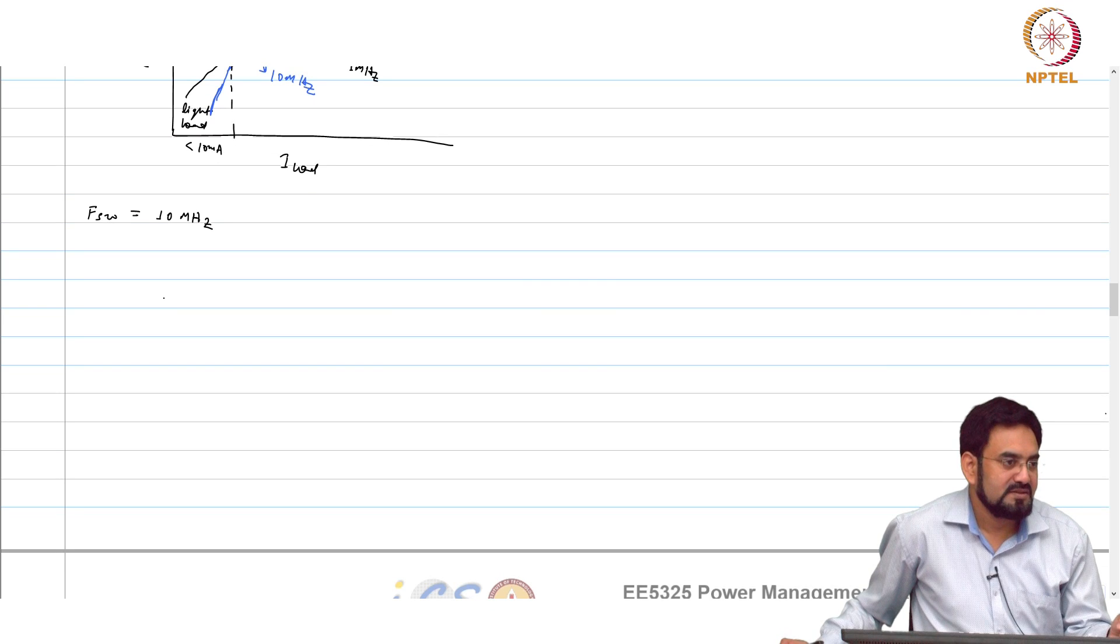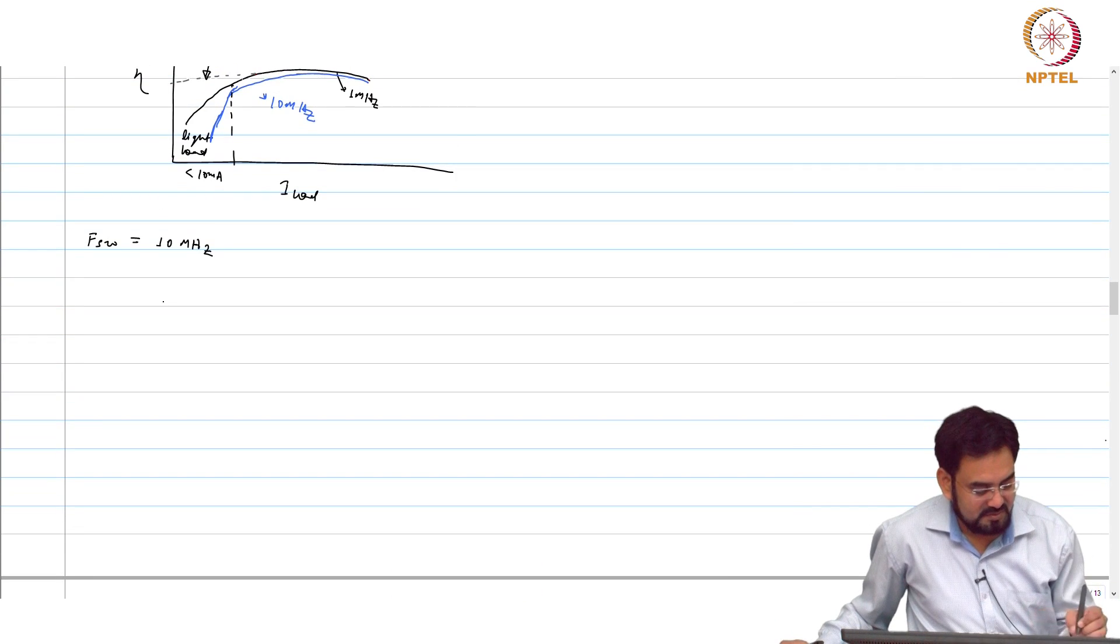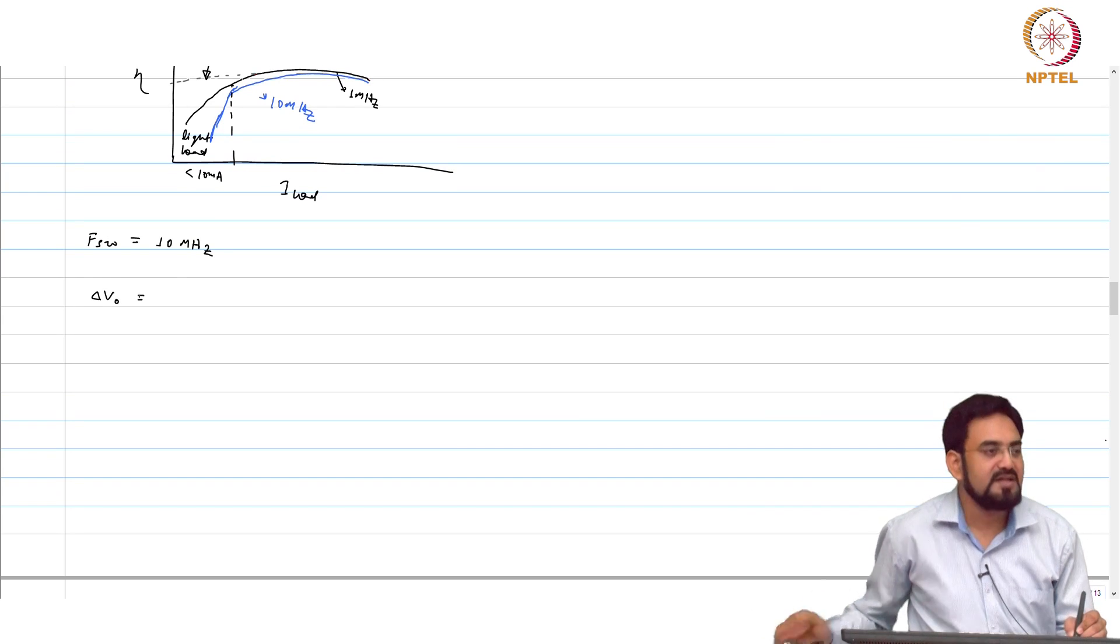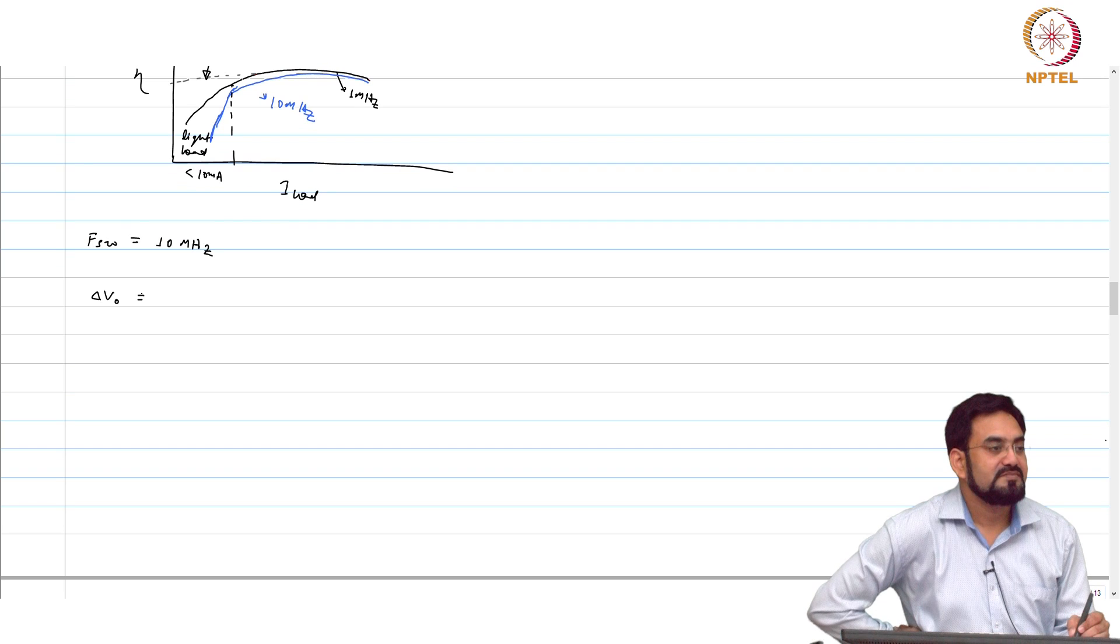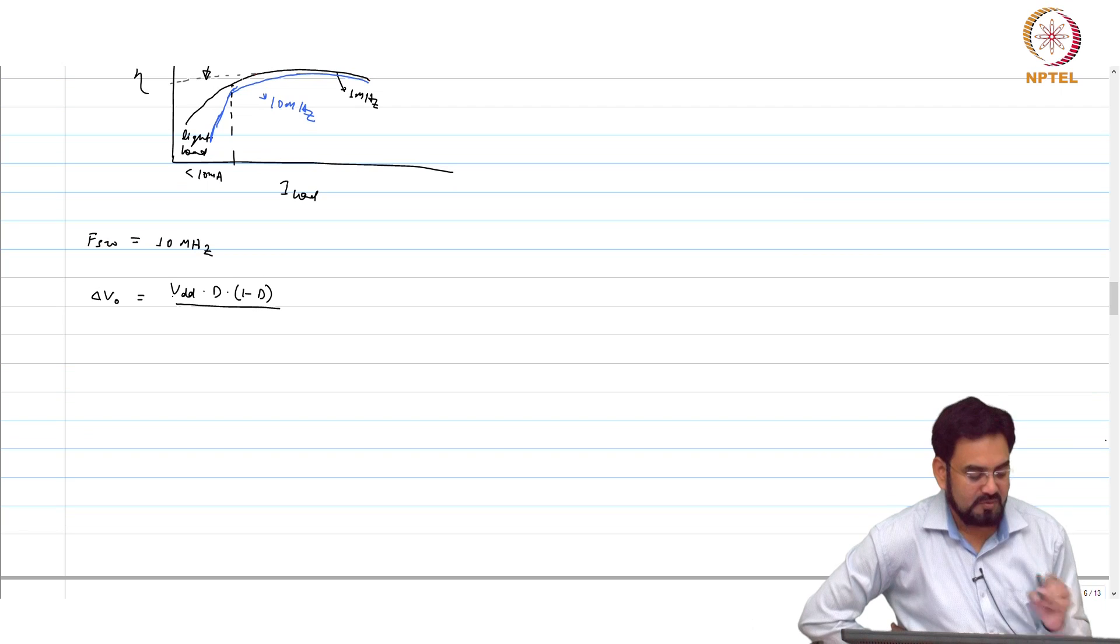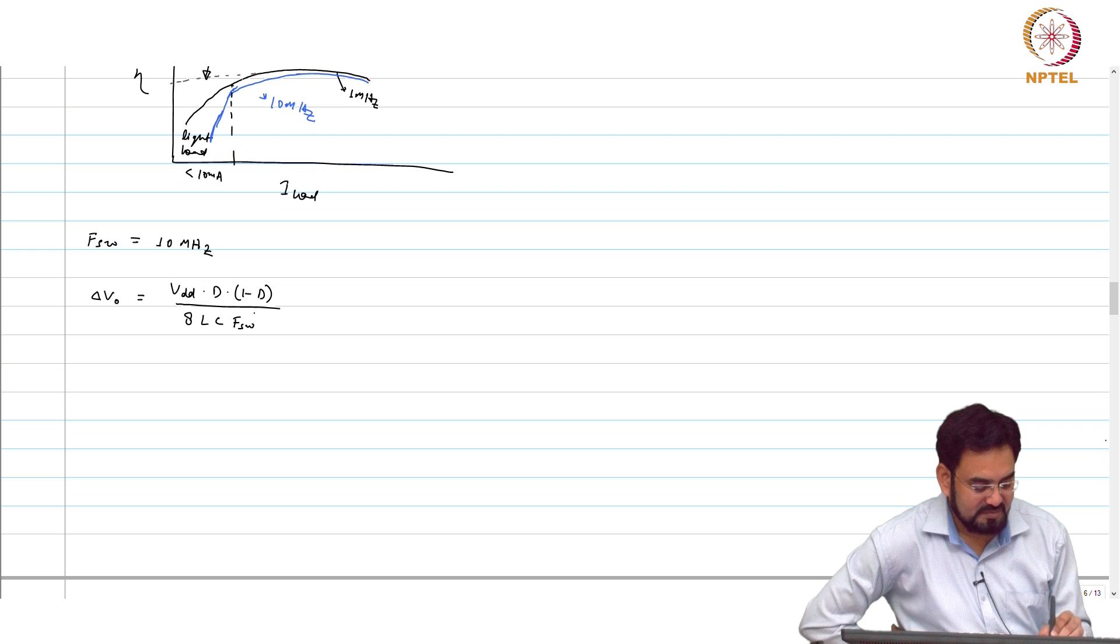FSW is 10 megahertz. How do we choose L and C now? Your ripple is there. Delta V out, how much was that? Anybody remembers? VDD into D times (1 minus D) over 8 L C FSW squared.